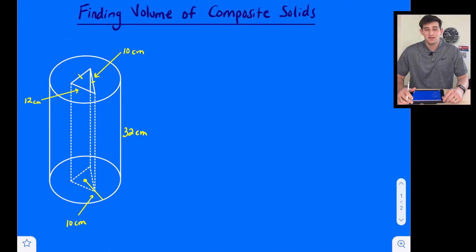Hello everybody, in this video we're going to talk about how to find the volume of composite solids. A composite solid could be two solids stacked together, or it could be one solid that has another solid chunk taken out of it. We're going to do one example of each of those.